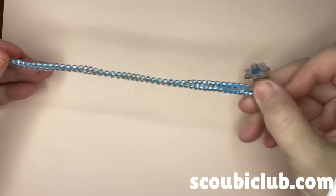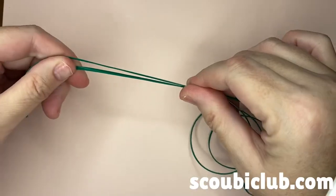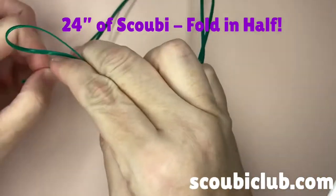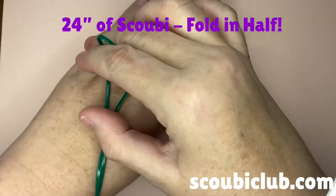It's called the zipper weave because the pattern greatly resembles a zipper. To do this project, you'll need 24 inches of Scoubi for the base color.